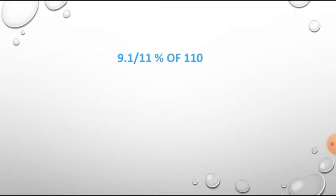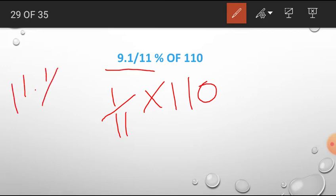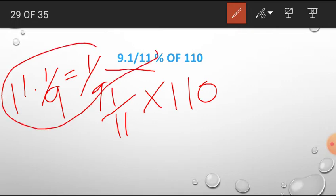And let us solve one more example. 9 1 by 11 percent of 110. And 9 1 by 11 percent of 110 means 1 by 11, into 110, right? Remember, 9 1 by 11 percent means 1 by 11. Similarly, 11 1 by 9 percent means 1 by 9. These are two identical values. You can easily remember this.